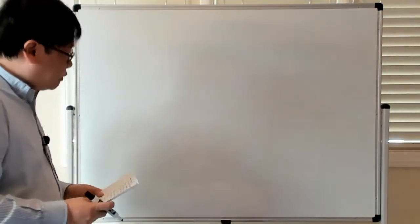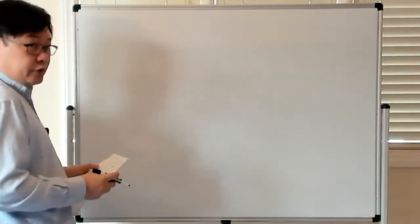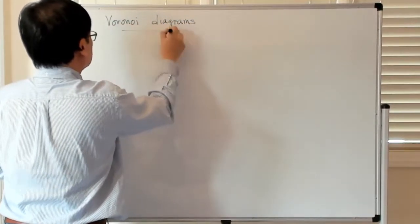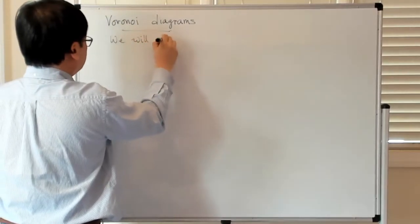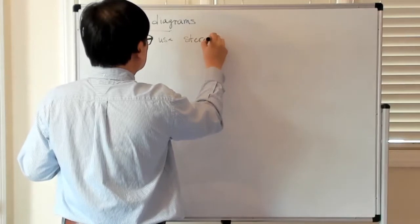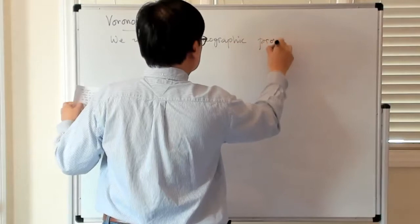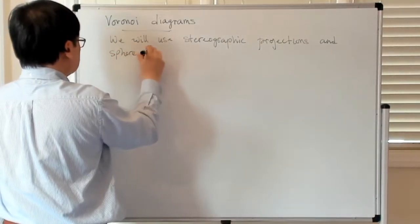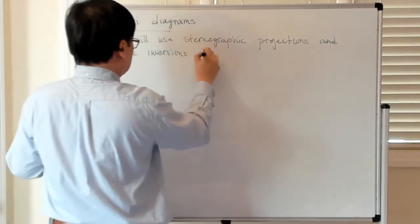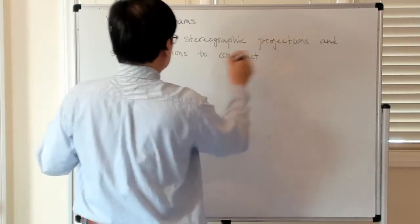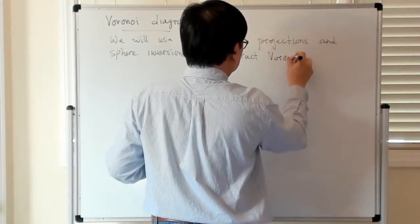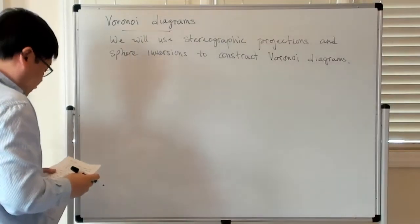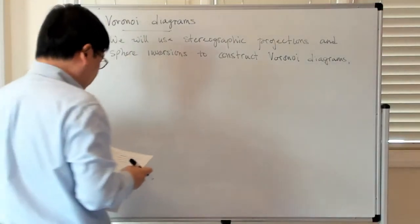We're going to describe how Voronoi diagrams can be described in terms of stereographic projections and sphere inversions. We will use stereographic projections and sphere inversions to construct Voronoi diagrams. And as it will turn out, the nerve associated with these Voronoi diagrams will induce a complex called the Delaunay complex.